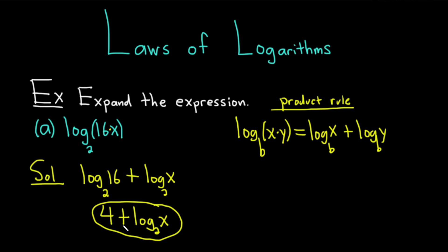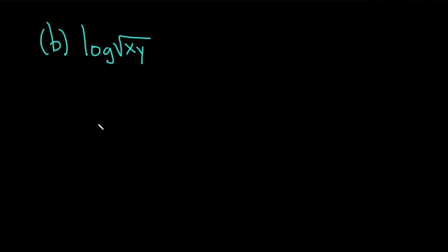Let's go ahead and do another example. Part B, we have the log of the square root of x times y. Again, in this case, we do have a product. We have x times y, but we also have the square root.